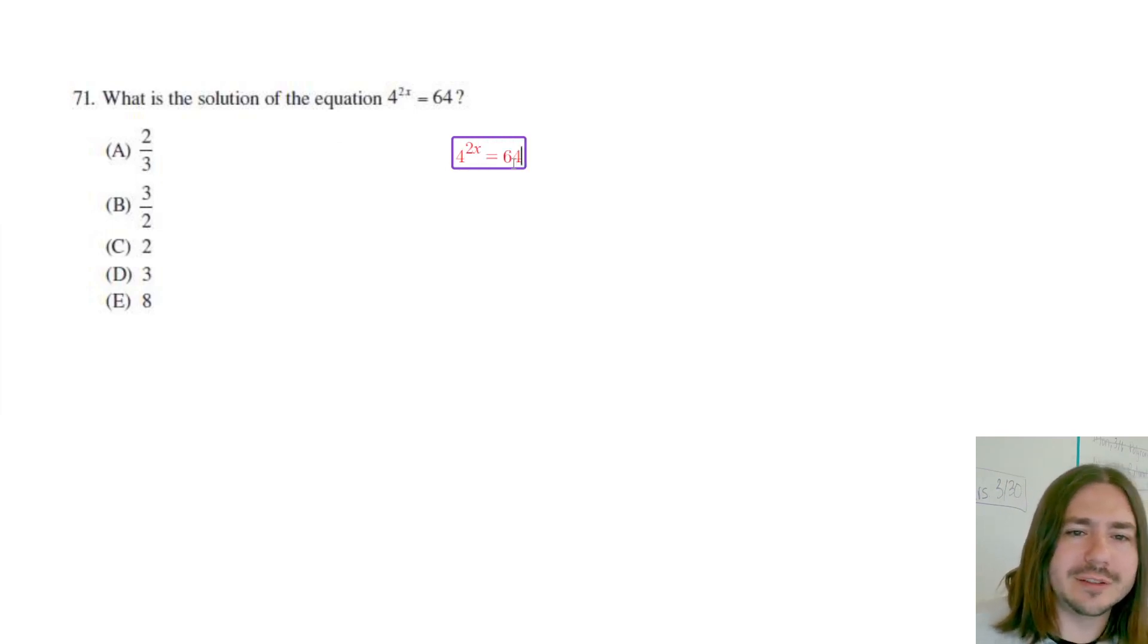Okay, 64 is equivalent to 4 to the third power. 4 cubed is 64, in other words 4 times 4 times 4 is 64. Now once we have two equal powers with the same base, using the one-to-one property we can drop the bases...